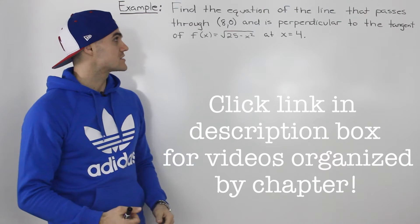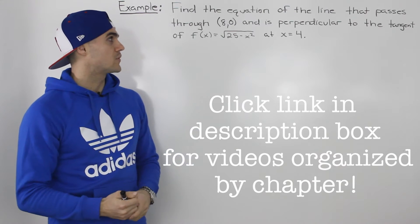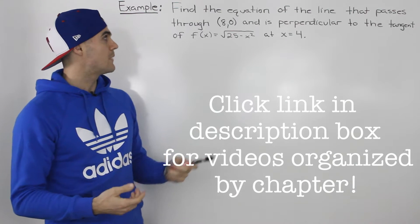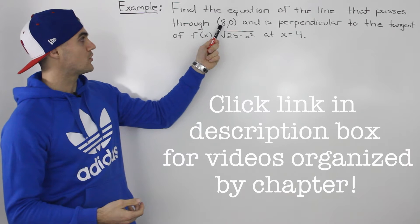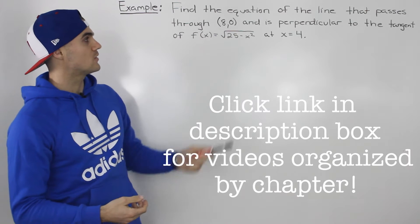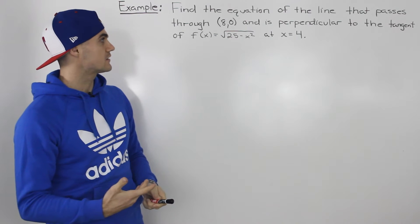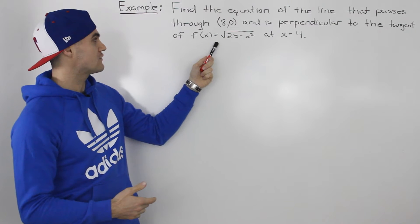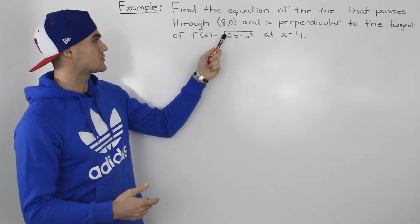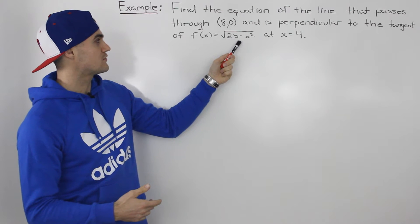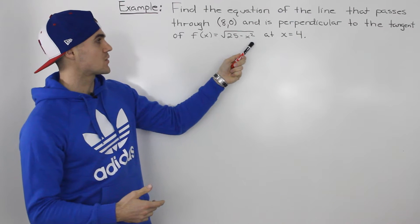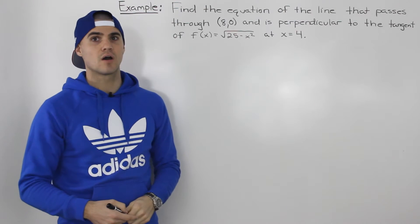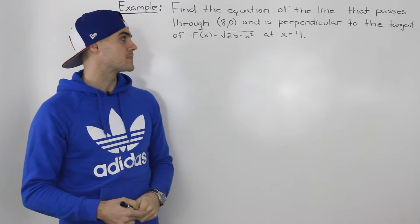What's up everybody? Moving on to the next example, we have to find the equation of a line that passes through the point (8, 0) and is perpendicular to the tangent of f(x) equals the square root of 25 minus x squared at an x value of 4.